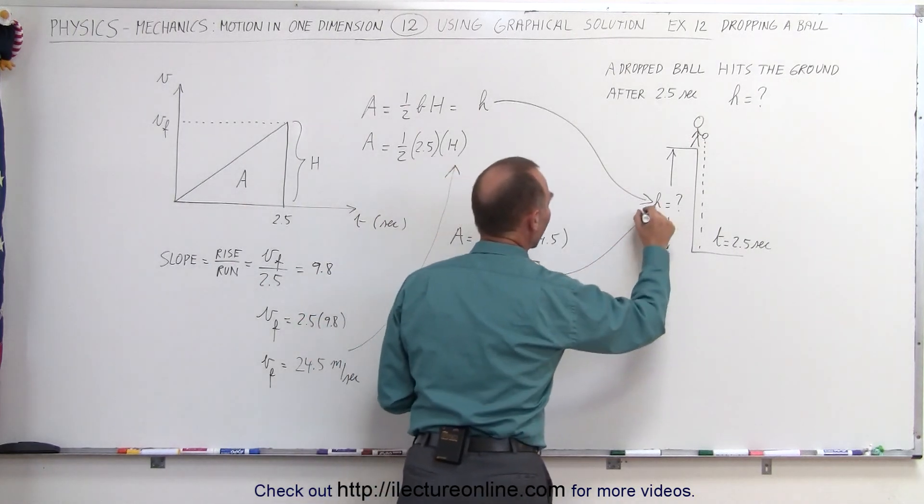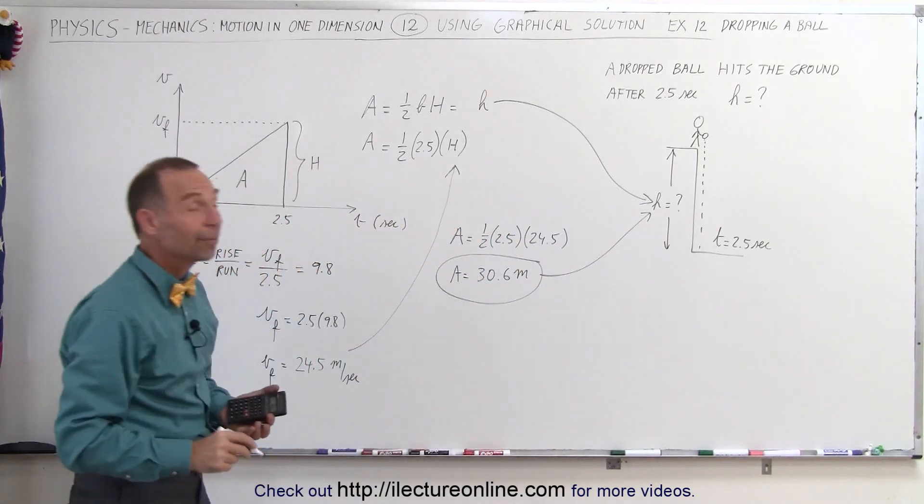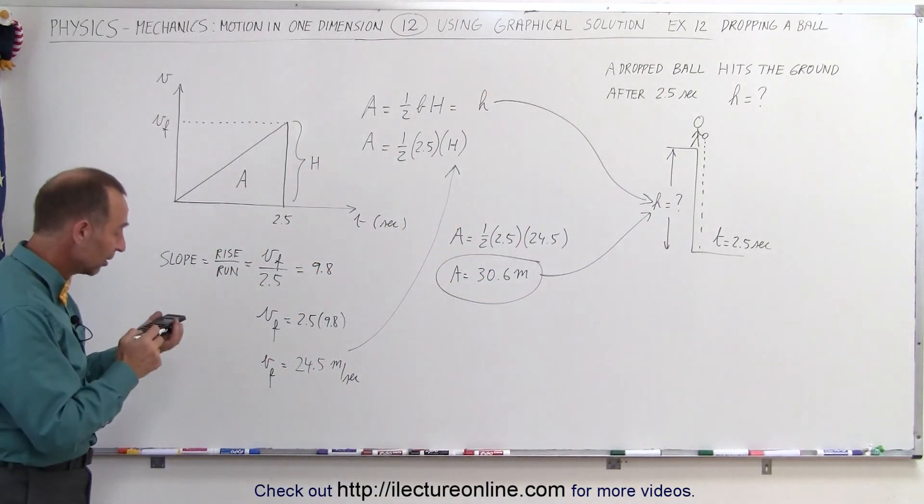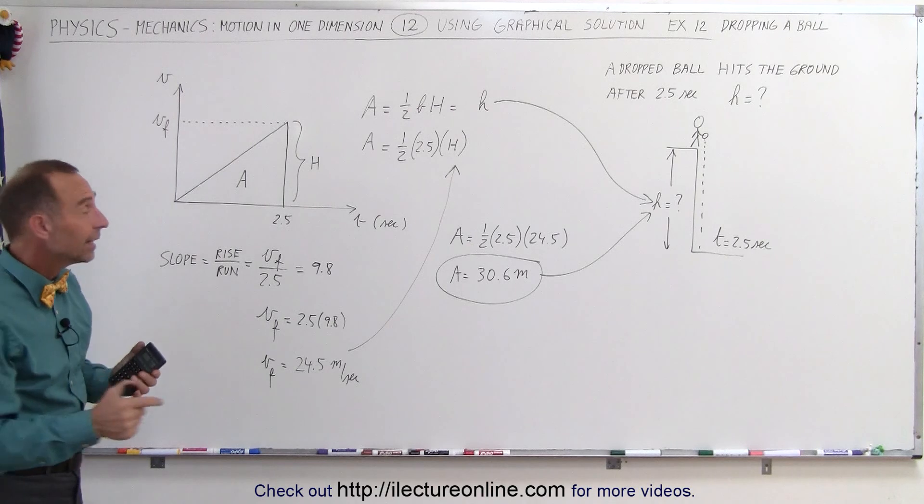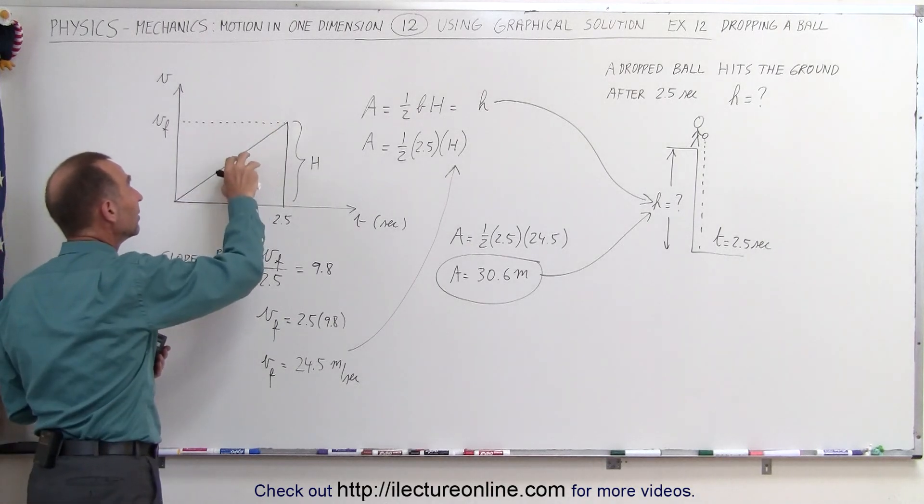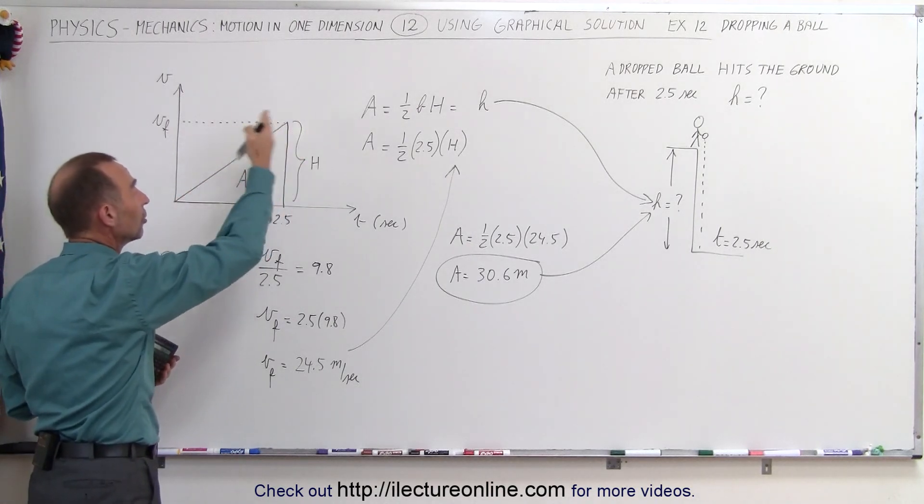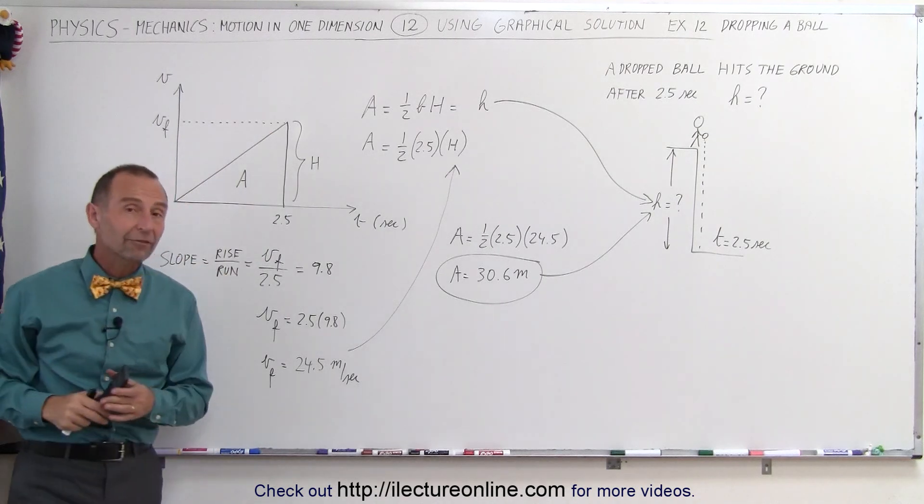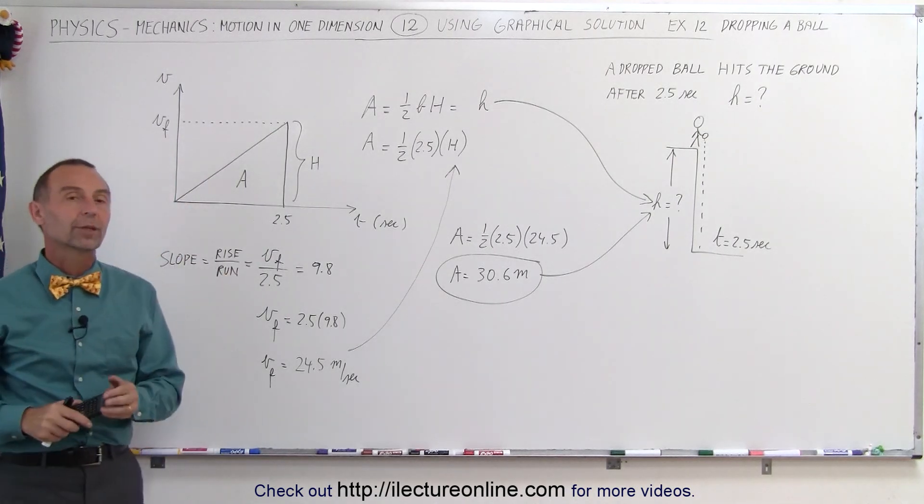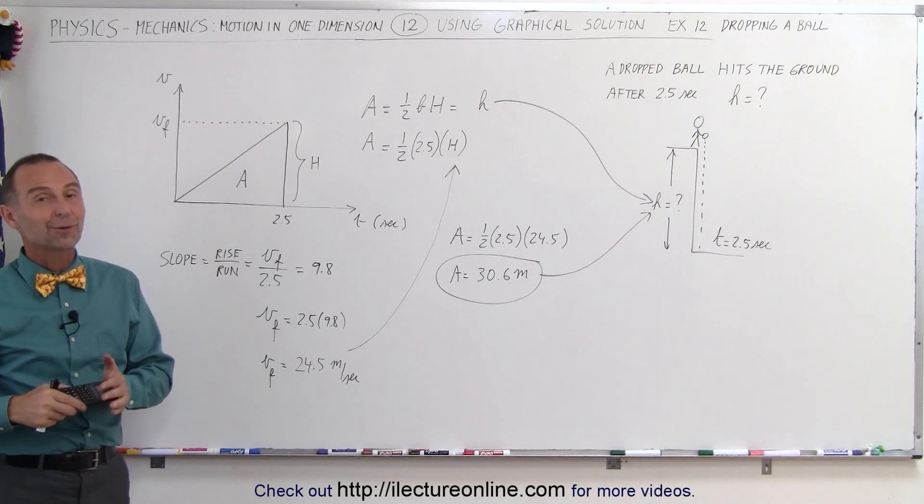And that is equal to the height from which the ball is dropped. So again, using this graphical technique, understanding that the area underneath the curve is equal to the distance traveled, that the slope is equal to the acceleration, using those two parts of the graph, we can easily solve for this particular problem. And that's how we do that.